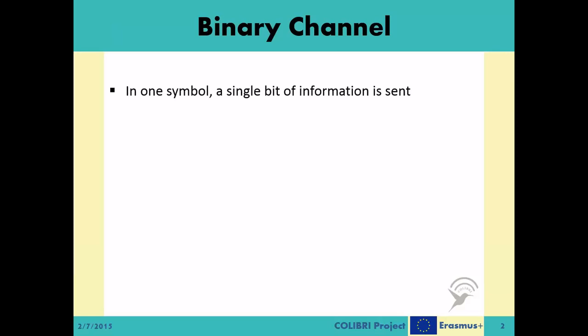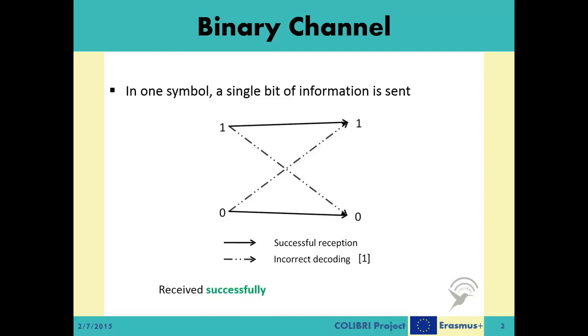In this model, one symbol represents a single bit of information, zero or one. When this information is transmitted over the communication medium, it can arrive at the receiver unchanged or it can be warped due to numerous issues in the channel and arrive incorrectly at the receiver. We call the first case successful reception and the second case incorrect decoding.